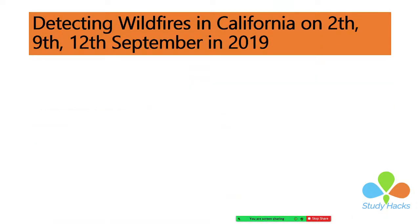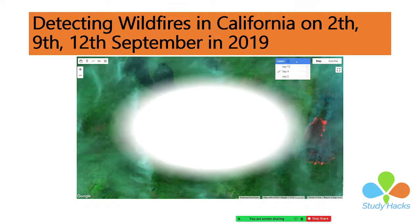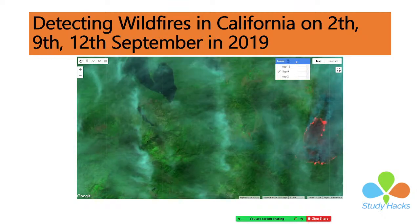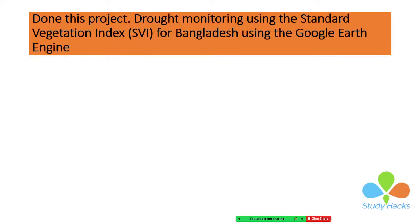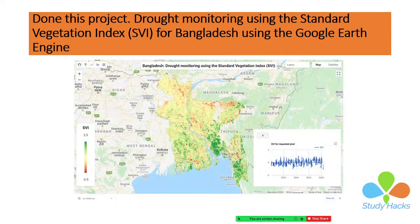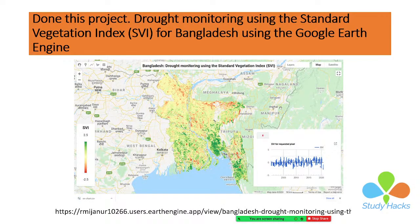This is another project for detecting the wildfire in California between a specific time period. You can see this is the fire — we can easily identify and detect the fire condition using the Google Earth Engine platform. This is a web application link so you can easily go to the link and get a better view of the fire condition. This is another project for growth monitoring using the Standard Vegetation Index (SVI) for the Bangladesh region — we can check the road condition of any place in Bangladesh from the web application link.